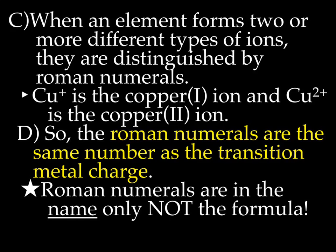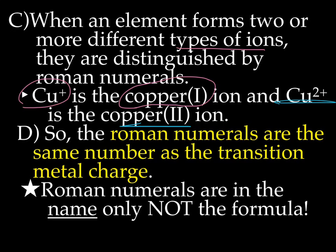When an element forms two or more different types of ions — and again, these are basically the transition metals — we use what's called a Roman numeral to distinguish between them. For example, Cu1+ is going to be the copper Roman numeral I ion, whereas Cu2+ is going to be copper Roman numeral II. Roman numerals are the same number as the transition metal charge; they basically identify the charge. We only use Roman numerals in the formula, not the name.